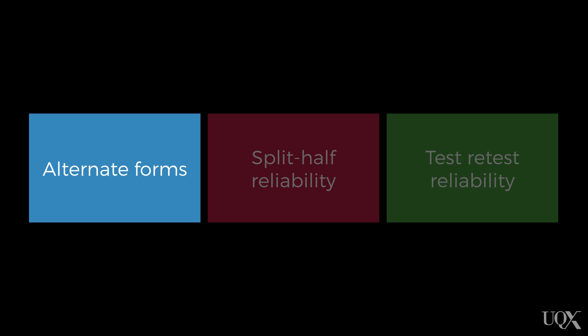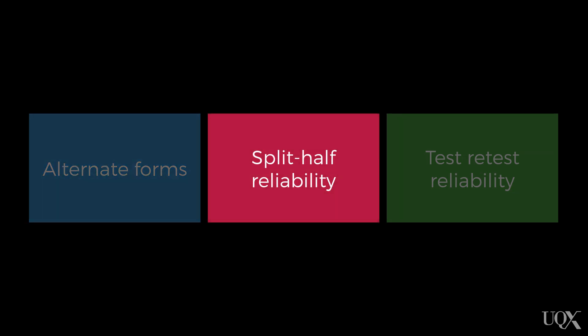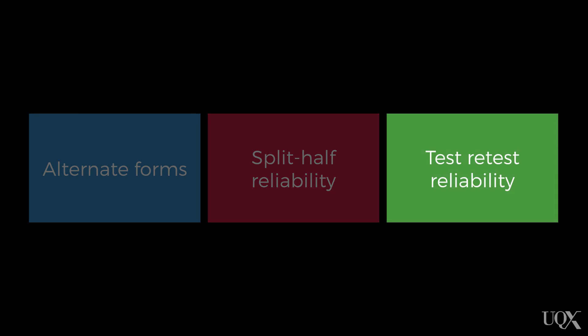Now, when it comes to an intelligence test, we can't evaluate its reliability by just looking at it to see whether or not it wobbles all over the place like my cheap tape measure. There are different techniques we could use to evaluate the reliability of tests. These include alternate forms reliability, split-half reliability, and test-retest reliability.